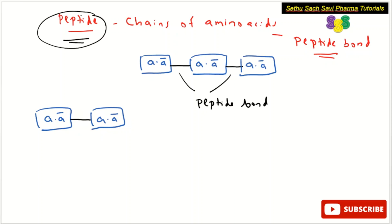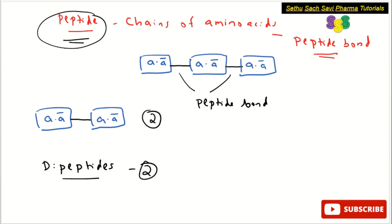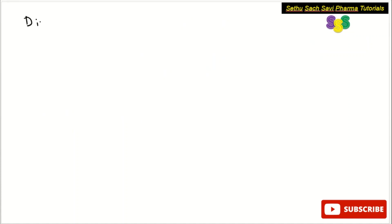The minimum number of amino acids required to form a peptide is two, and such a peptide formed by two amino acids is called a dipeptide. In dipeptides, the number of amino acids is two.